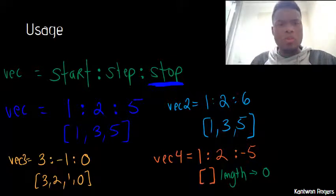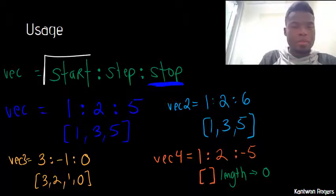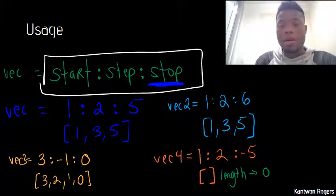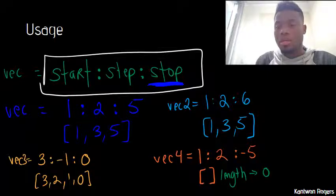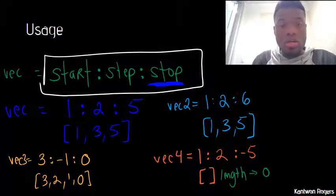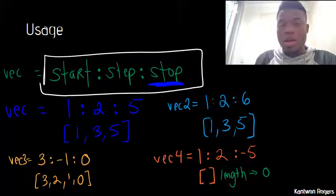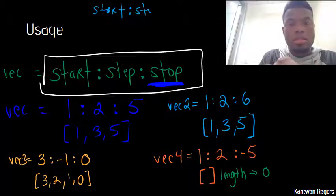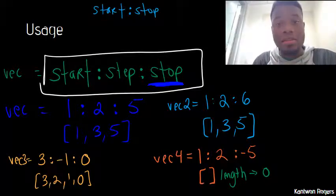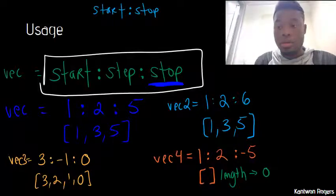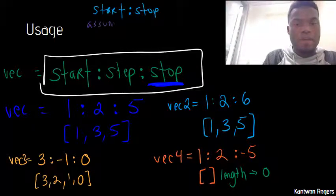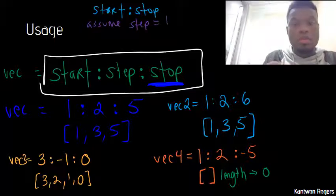And one last thing actually. So this is the basic syntax for the colon operator. Another syntax for the colon operator that I can use is simply eliminating the step. So computer scientists are notoriously lazy. And so there's a shorthand method of doing this as well, where I could just say start colon stop. In this case, there's an assumed step size of one. So in this case here, it assumes my step is one.